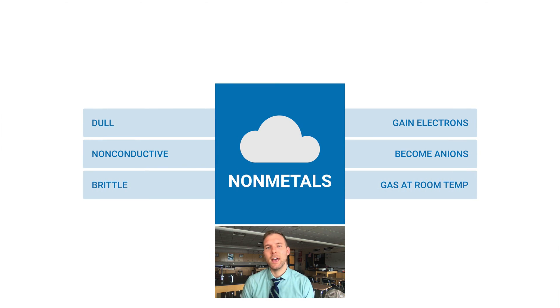Let's move on to non-metals. Non-metals are in many cases just the opposite of metals. They're dull, not shiny. They're non-conductive and good insulators. They're brittle. Metals can be beaten into thin sheets, but with non-metals, that's not the case. They're pretty brittle and tend to break down easily.